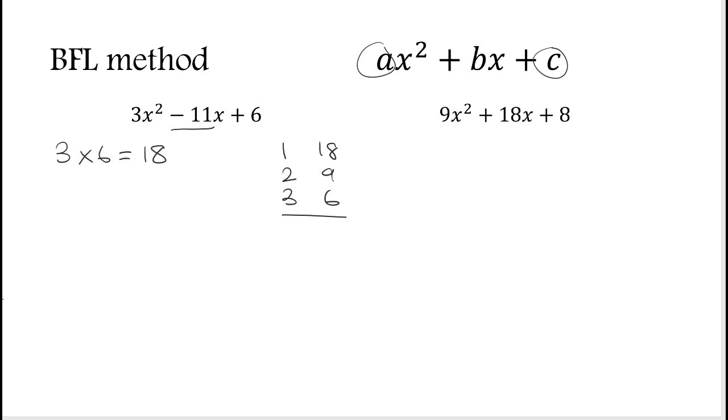So if they're going to multiply to make 18 but add to make minus 11, then both numbers must be negative. We're looking for these to be negative, and we can see it's going to be these two, which will add to make minus 11. This is where this method strays from splitting the middle.